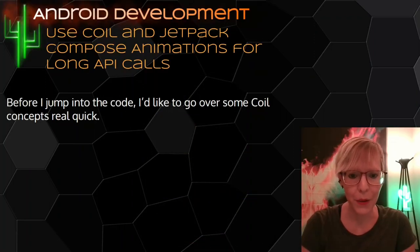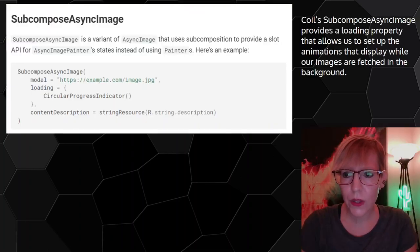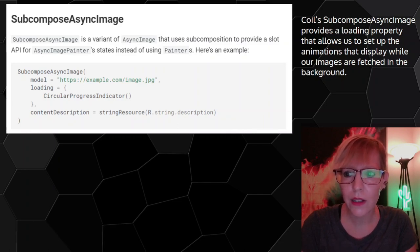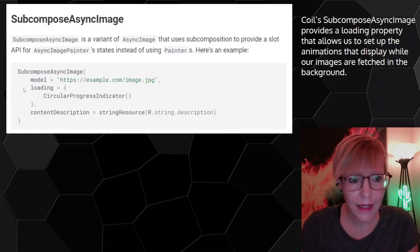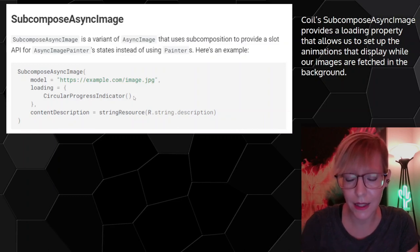Before I jump into the code, I'd like to go over some Coil concepts. Coil's SubcomposeAsyncImage provides a loading property that allows us to set up the animations that display while our images are fetched in the background from the API. Here's the image composable — you set up your model, which is the image URL, and then you can set this loading property to a composable, which is pretty simple and easy to use.